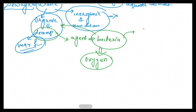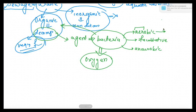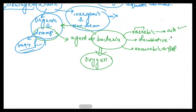Bacteria is of two basic types: aerobic and anaerobic. And one in between is facultative. Aerobic means 'aero' — arrow means air. So aerobic bacteria will be requiring air. Anaerobic bacteria will not be requiring air. Facultative bacteria can work in both conditions.